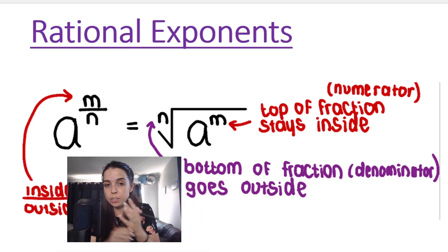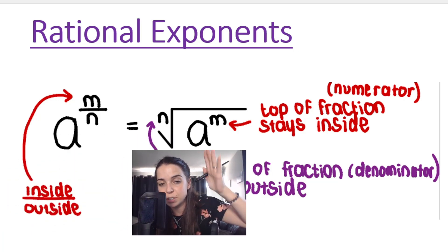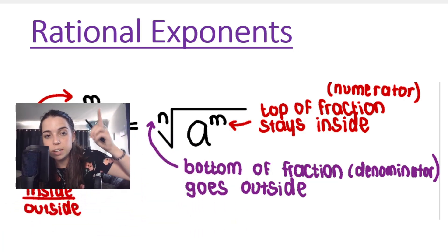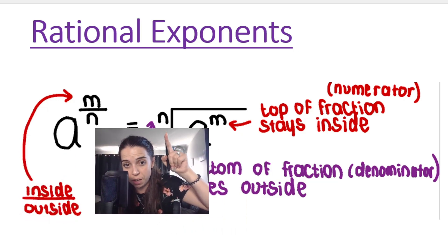You can also reverse it and take something here with a rational exponent and you can convert it into this form. Remember, what is the numerator of this fraction will be inside the little house, inside the little root, and the denominator will go on the outside.